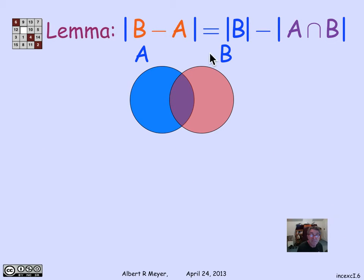The lemma says that the size of B minus A is equal to the size of B minus the size of A intersection B. So here we're back to the Venn diagram. A is blue, B is reddish, and the intersection region, that lens-shaped region, is shown in purple. And we want to prove this lemma. Well, again, what we can do is look at the set B broken up into two pieces.